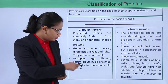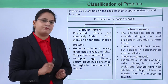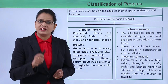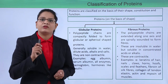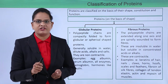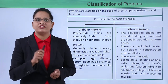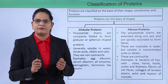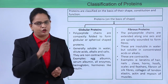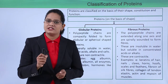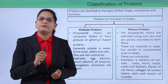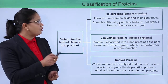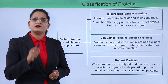Additional examples of fibrous proteins include fibroin, which is found in silk, and collagen, which is found in connective tissues. So those are the two types of proteins on the basis of shape: globular and fibrous. Now let us look at classification on the basis of chemical composition.